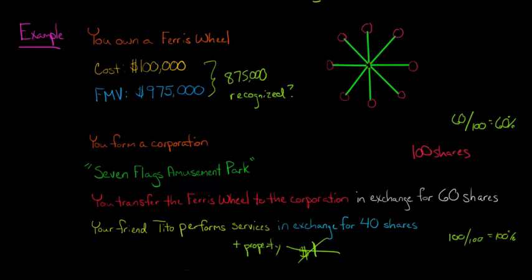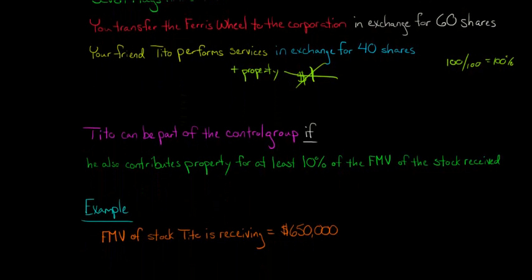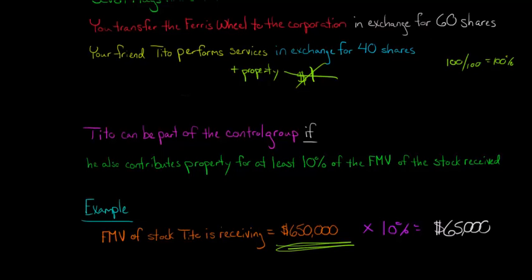Okay. So there's basically a minimum threshold that the IRS uses and it's basically 10%. So you look at the fair market value of the stock that Tito is receiving. And so let's say that the fair market value of the stock that Tito is receiving is $650,000. So then basically we multiply that by 10% to see if we meet this threshold. So we multiply that by 10% and that's going to give us $65,000.